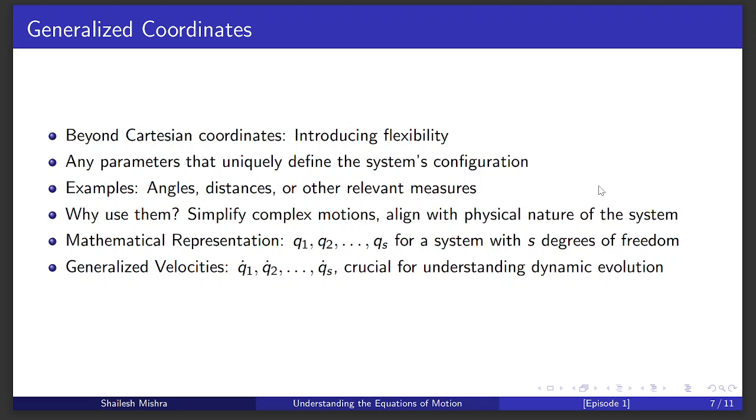Generalized coordinates can be any parameters that uniquely define the system's configuration. They might be angles, distances, or any other relevant measures, depending on what makes sense for the problem at hand. The beauty of generalized coordinates lies in their flexibility. They allow us to describe complex motions in a simpler, more natural way, tailored to the specific dynamics of the system we're studying.